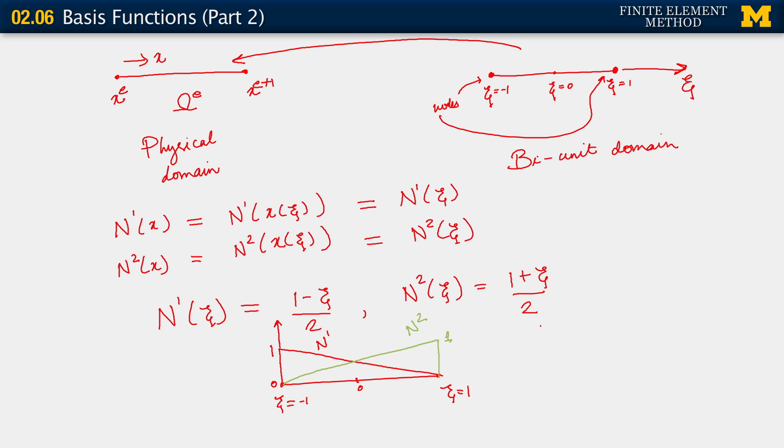So let me just write those facts here. What we observe is that N^1 at xi equals minus 1 equals 1, N^1 at xi equals 1 is 0, N^2 at xi equals minus 1 is equal to 0, and N^2 at xi equals 1 is 1. Now if we write these points xi equals minus 1 and xi equals 1 as, let me call this point xi_1 and this point is xi_2, just corresponding to the idea that the node on the left in this bi-unit domain is node 1 for the element and the node on the right in the bi-unit domain is node 2.